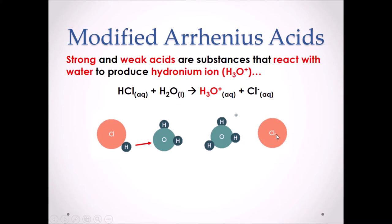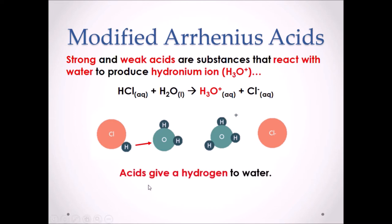As a result, we're left with H3O+, which used to be water, and Cl−. We can think of each hydrogen atom as having a +1 charge. H2O, a neutral molecule with a charge of zero, gains one hydrogen and its overall charge becomes +1. HCl, also neutral, loses a hydrogen and loses a +1 charge, giving Cl− a −1 charge. We can think of acids as a species that gives a hydrogen to water.